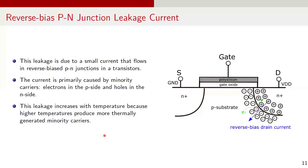Reverse bias PN junction leakage current occurs due to the current that flows in the reverse biased PN junctions of a transistor. When a junction is reverse biased, the current is primarily caused by thermally generated minority carriers — electrons on the P side and holes on the N side. This leakage current increases with temperature because higher temperatures produce more thermally generated minority carriers.